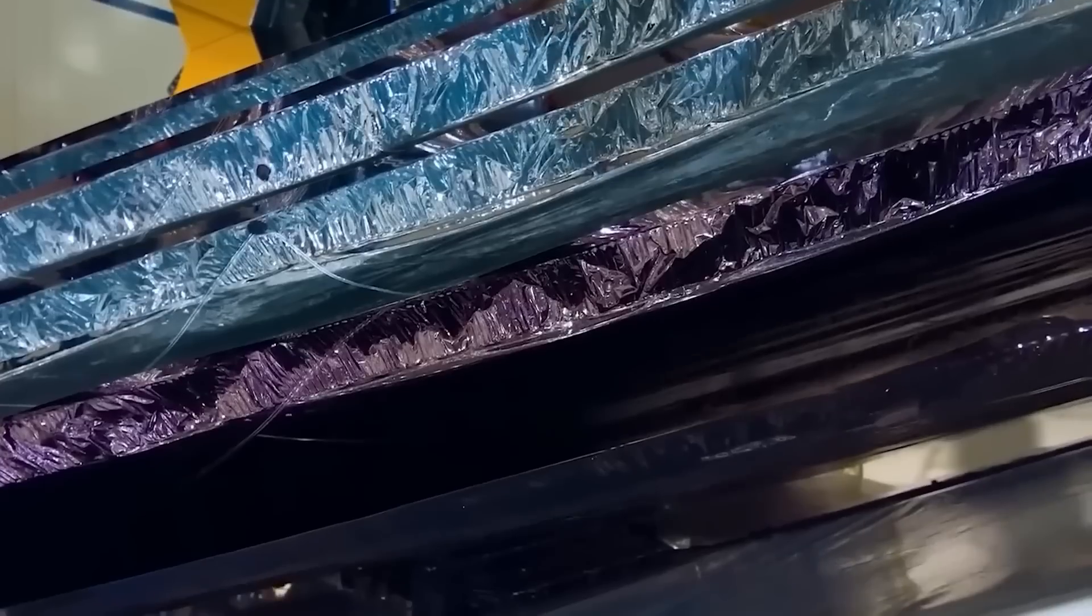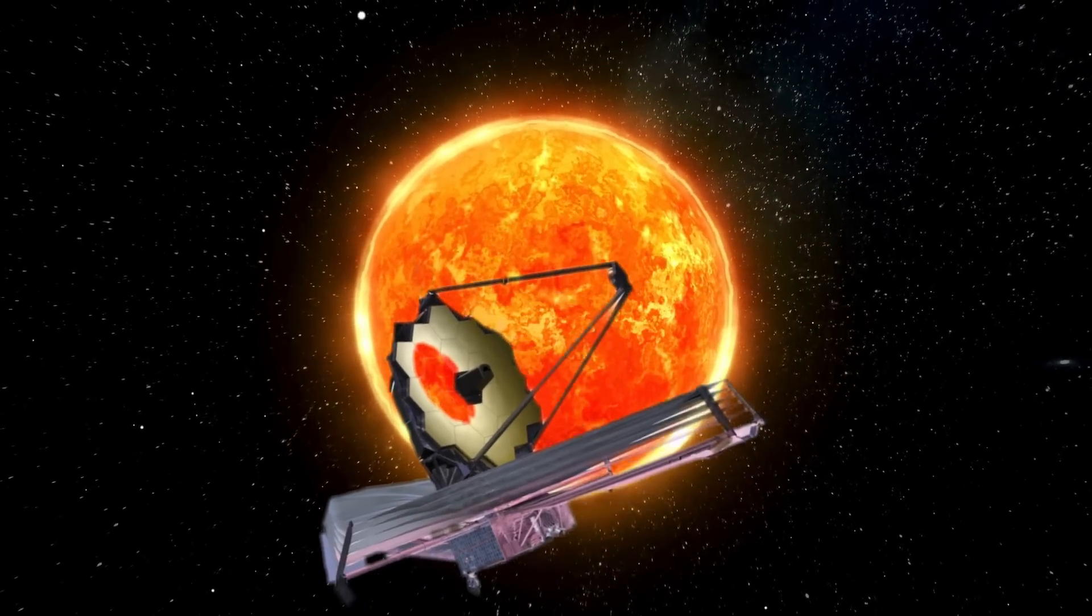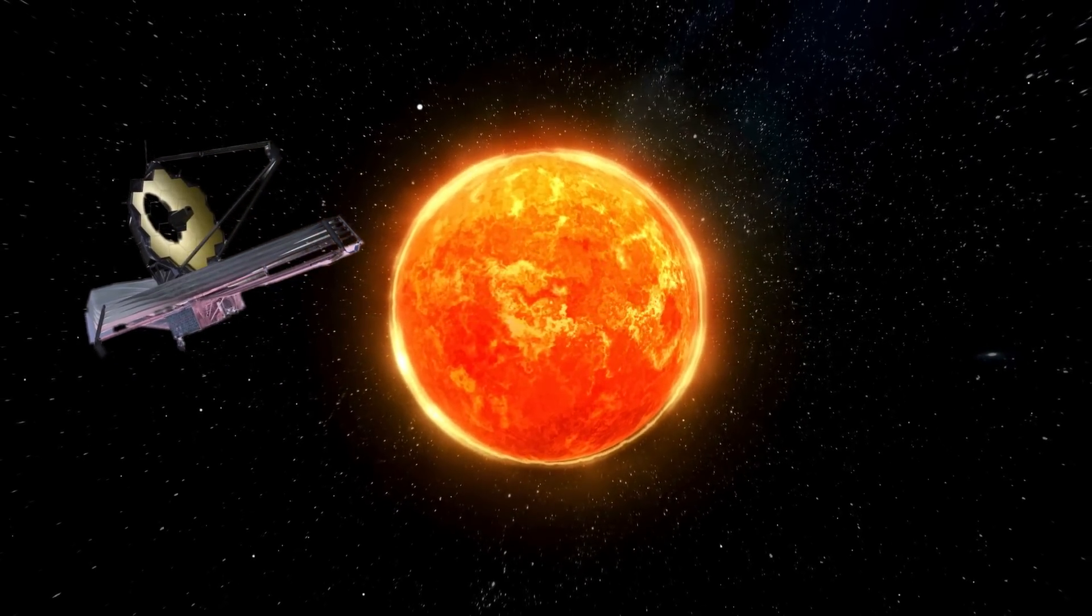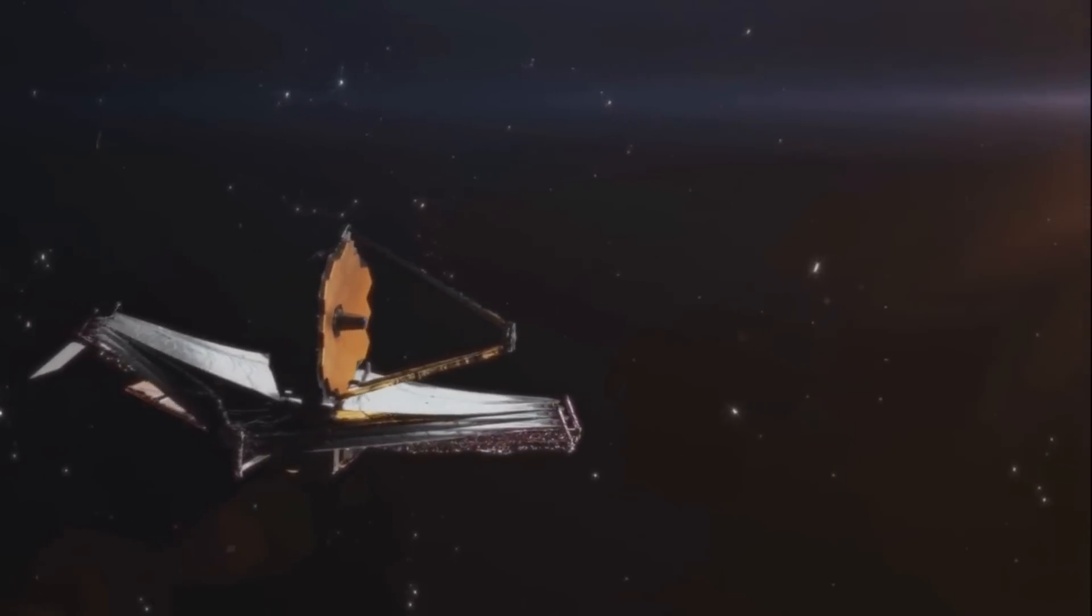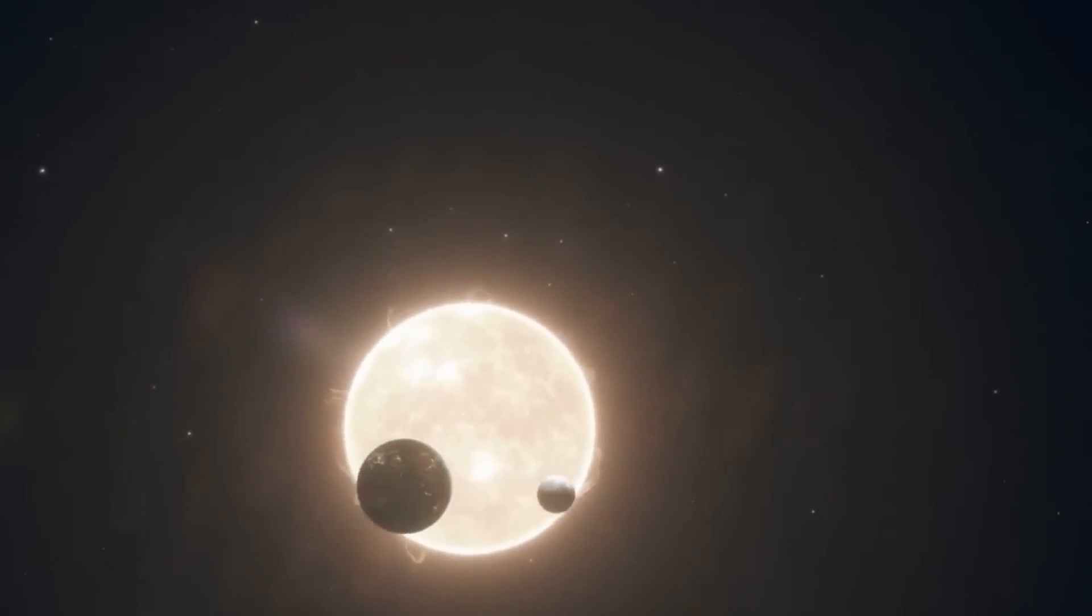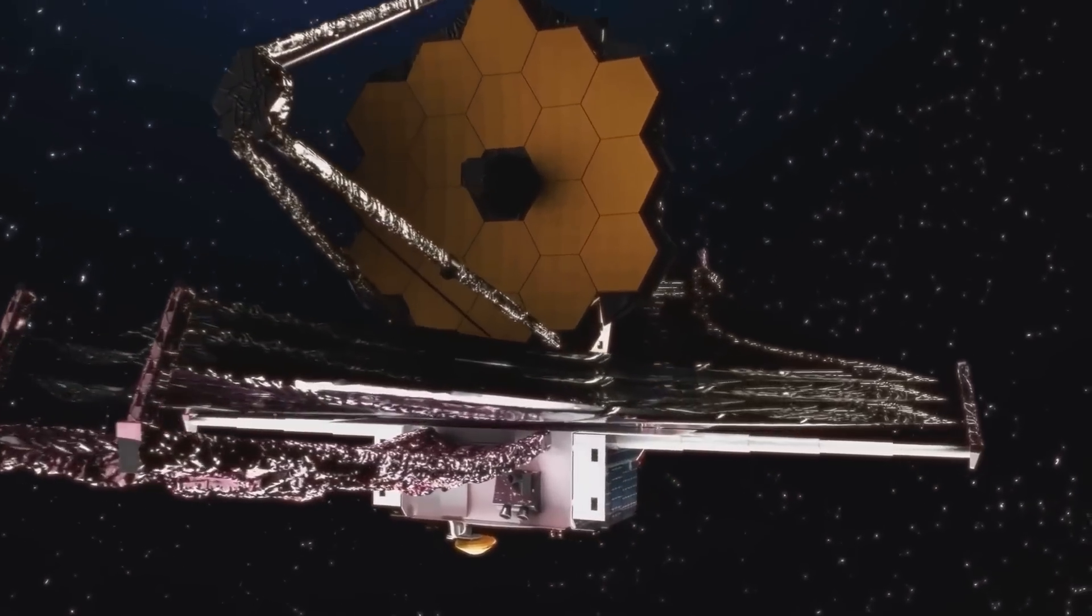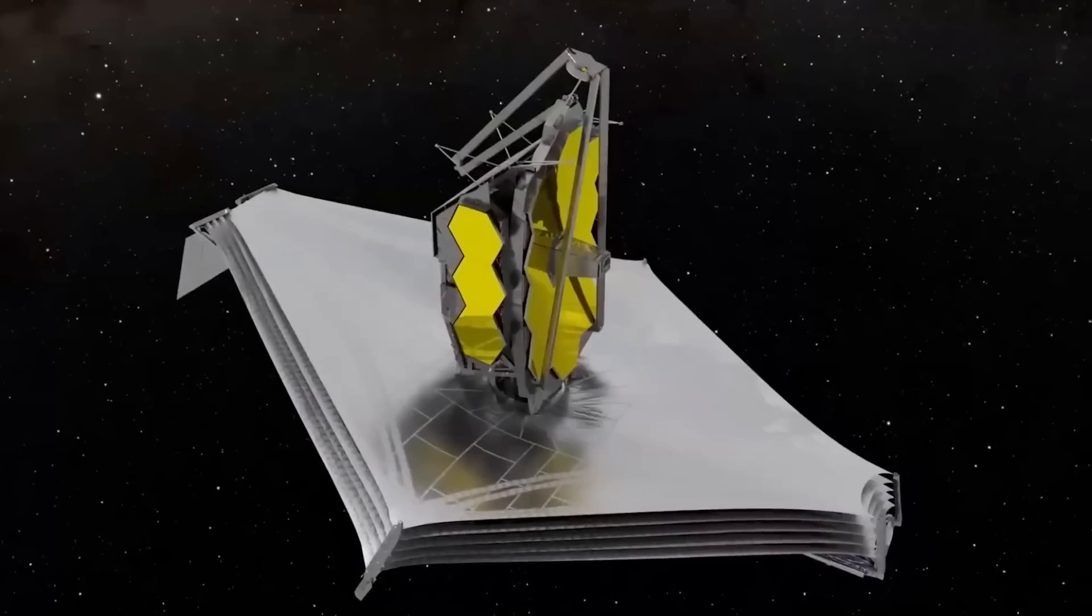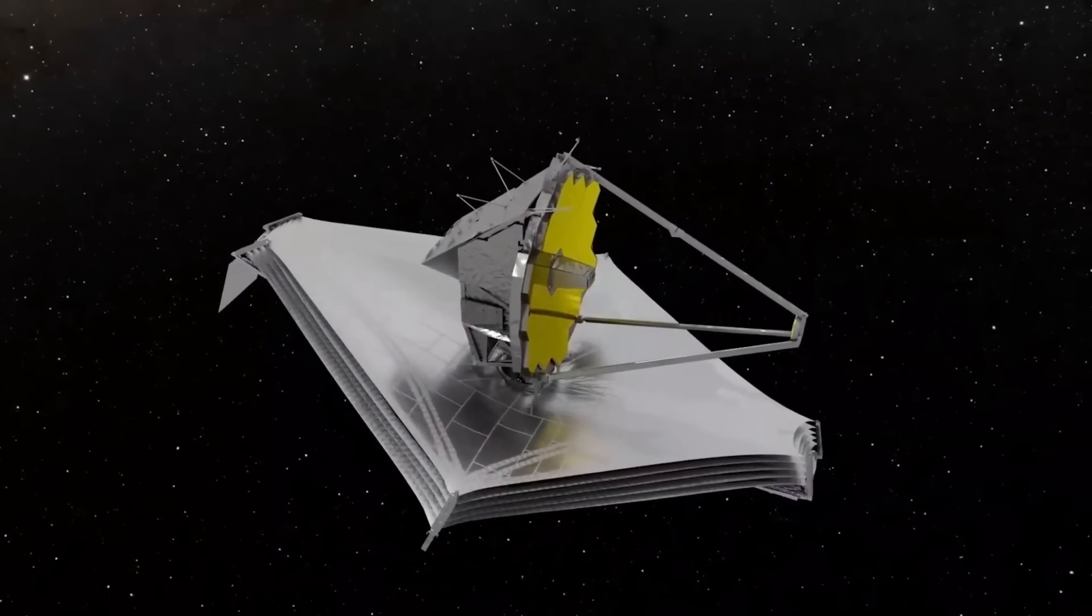The sunshield, a sizeable five-layered fabric that shields the telescope's delicate instruments from the sun's heat and light, was deployed during one of the most significant tests. To guarantee that every layer was correctly tensioned and aligned, this deployment needed to be carried out precisely. Any misalignment or damage to the sunshield could make it difficult for the telescope to see far-off objects. Fortunately, it passed this test and advanced to the subsequent one.